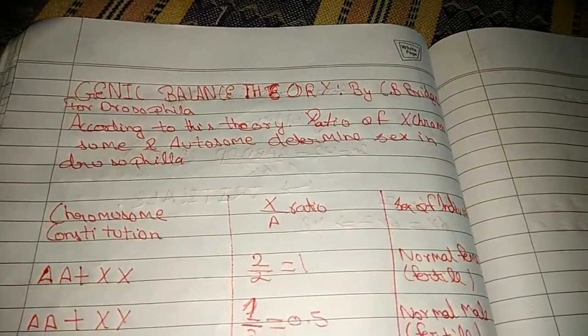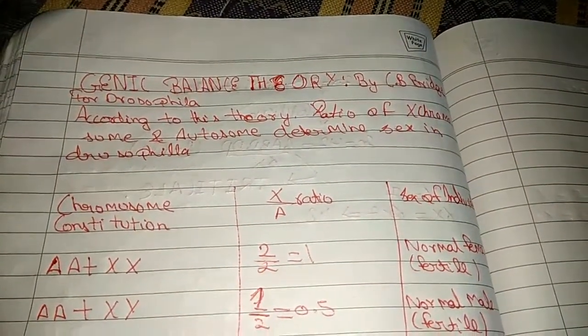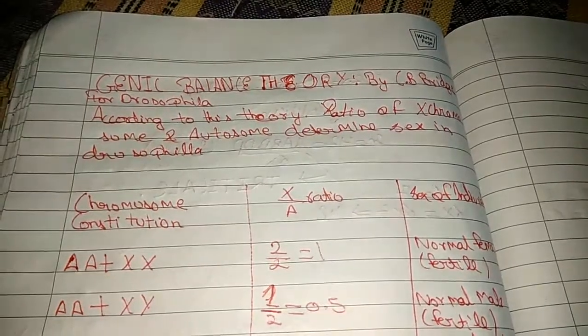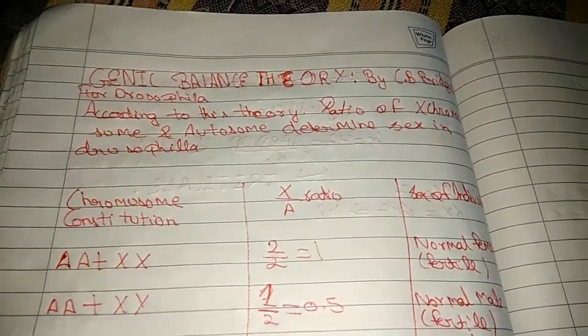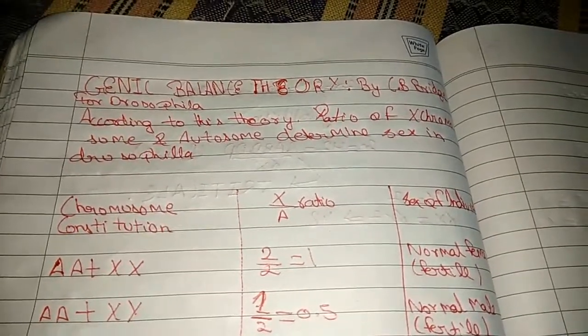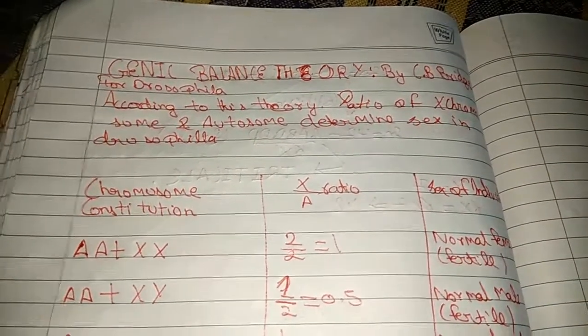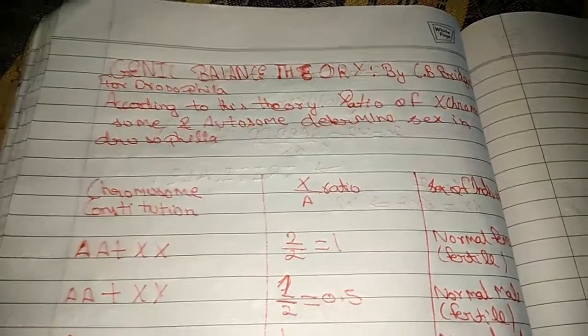Genic Balance Theory: According to this theory, the ratio of X chromosomes and autosomes determines the sex in Drosophila. The Genic Balance Theory was proposed by C.B. Bridges for Drosophila only.